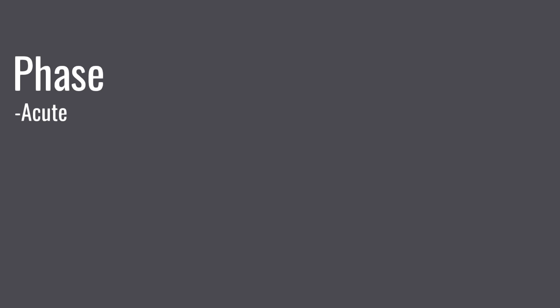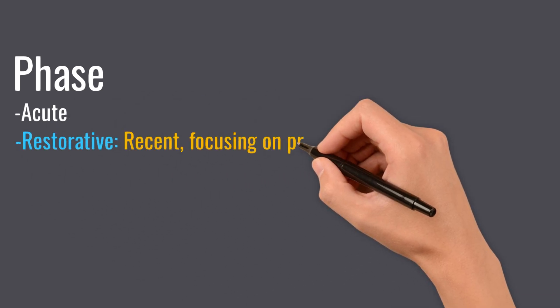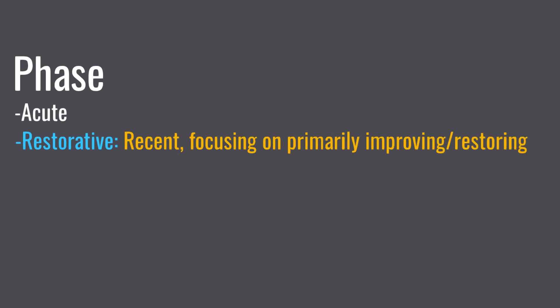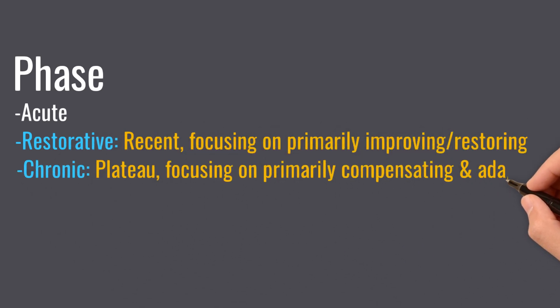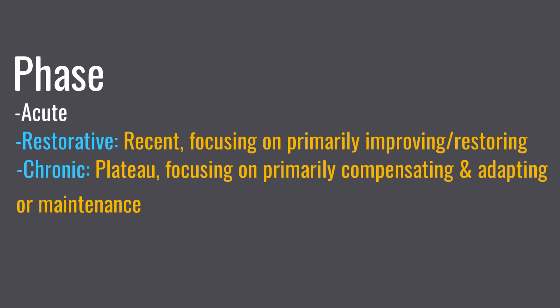The restorative and chronic phases are really the predominant phases we're going to see our clients in, particularly the third-year fieldwork groups. The restorative phase is when it's still a recent onset — they're often still admitted to hospital — and we focus primarily on improving or restoring function. The chronic phase is further down the line, maybe months or years, when the client has plateaued, and we focus more on compensating and adapting to improve occupational engagement.